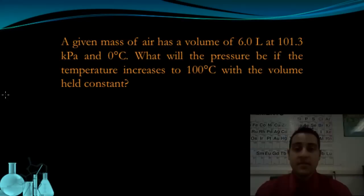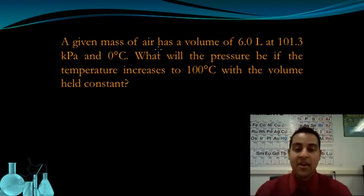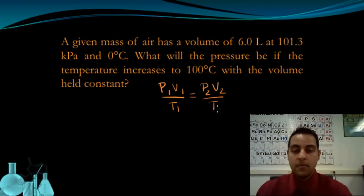So let's see if we can use this to our advantage in solving an actual problem. In this example, a given mass of air has a volume of 6 liters at 101.3 kPa and 0 degrees Celsius. What will the pressure be if the temperature increases to 100 degrees Celsius with the volume held constant? So again, I'm going to start by writing out my combined gas law. But this time, before I do anything, I'm going to recognize that the problem tells me that the volume is held constant. So this key phrase here, the volume is held constant, is going to tell me that I can cancel the V's right out of the equation just to simplify things for me.